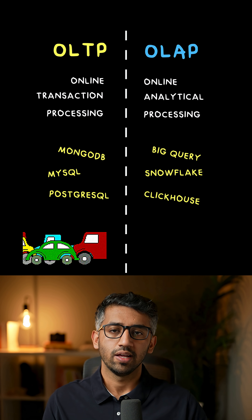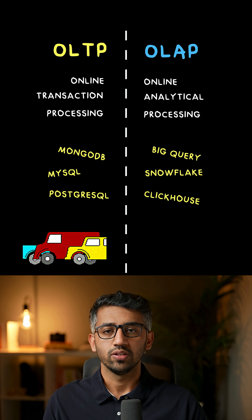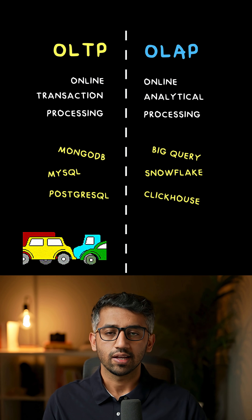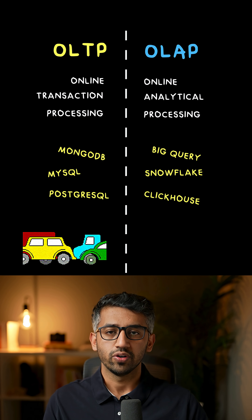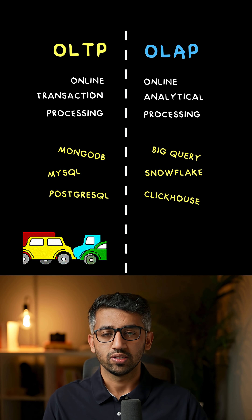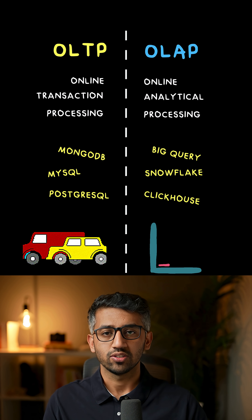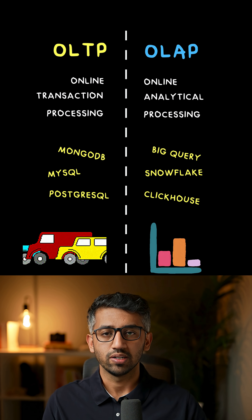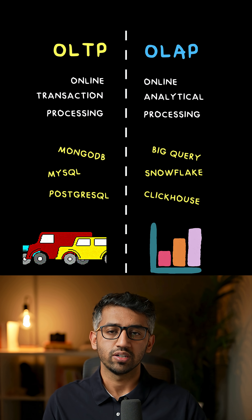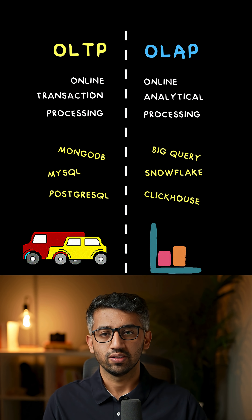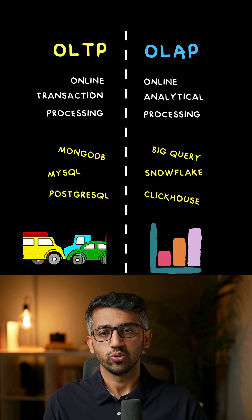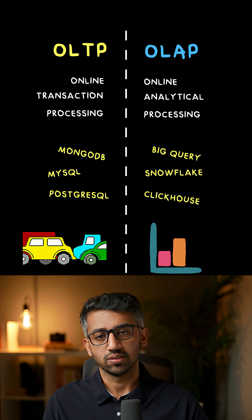OLAP databases like BigQuery, Snowflake, ClickHouse, and DuckDB are good for analytical processing. When you have to perform aggregations or similar queries to generate reports, they can be much faster compared to OLTP databases.